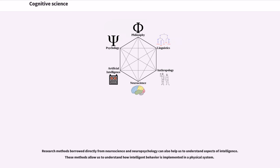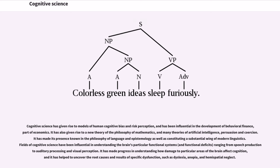Research methods borrowed directly from neuroscience and neuropsychology can also help us to understand aspects of intelligence. These methods allow us to understand how intelligent behavior is implemented in a physical system. Cognitive science has given rise to models of human cognitive bias and risk perception, and has been influential in the development of behavioral finance, part of economics. It has also given rise to a new theory of the philosophy of mathematics, and many theories of artificial intelligence, persuasion and coercion. It has made its presence known in the philosophy of language and epistemology as well as constituting a substantial wing of modern linguistics. Fields of cognitive science have been influential in understanding the brain's particular functional systems, and functional deficits, ranging from speech production to auditory processing and visual perception. It has made progress in understanding how damage to particular areas of the brain affect cognition, and it has helped to uncover the root causes and results of specific dysfunction, such as dyslexia, anopia, and hemispatial neglect.